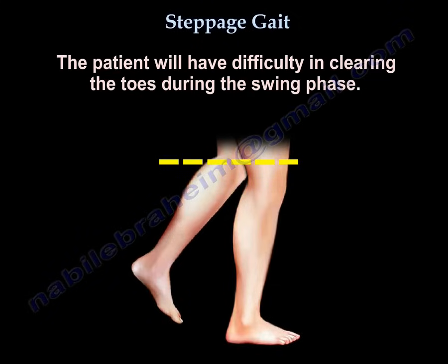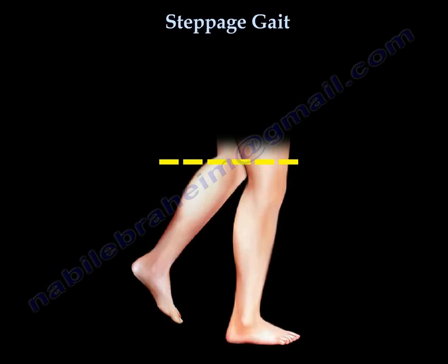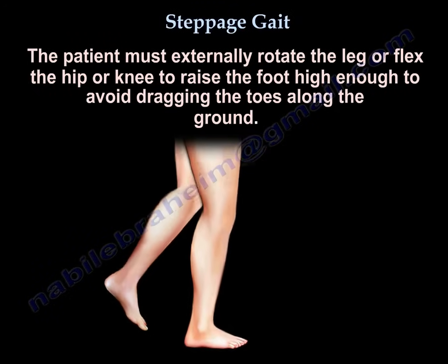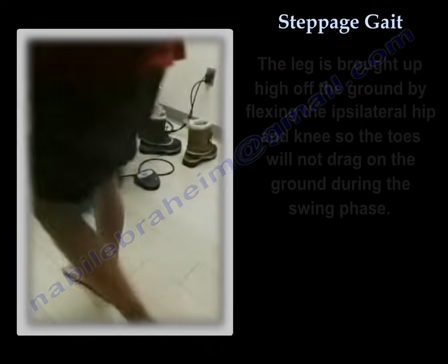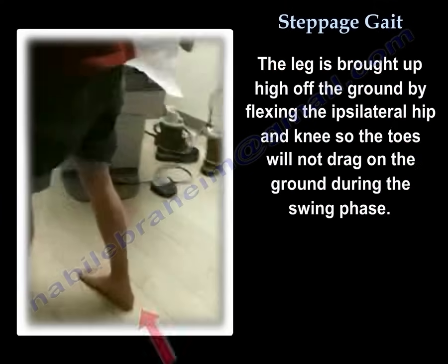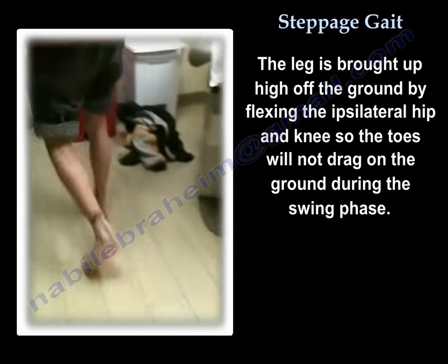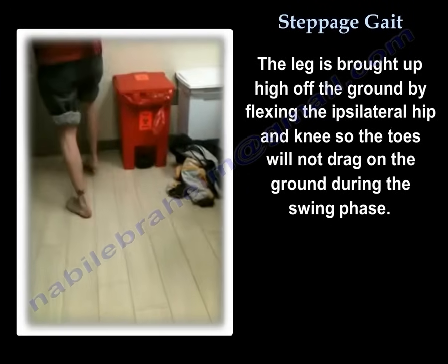The patient will have difficulty clearing the toes during the swing phase. The patient must externally rotate the leg or flex the hip or knee to raise the foot high enough to avoid dragging the toes along the ground. The leg is brought up high enough off the ground, flexing the ipsilateral hip and knee so that the toes will not drag on the ground during the swing phase.